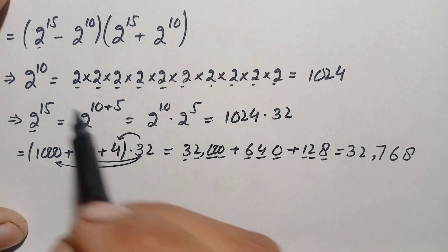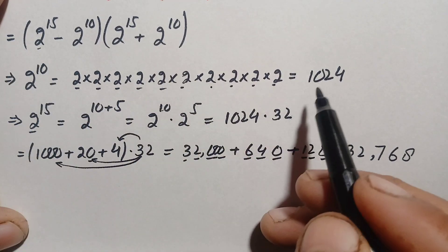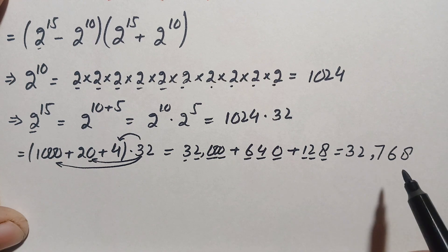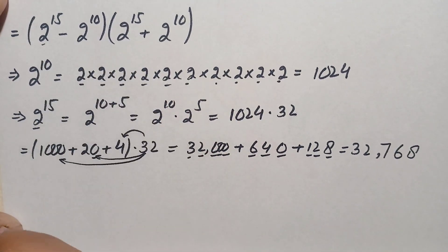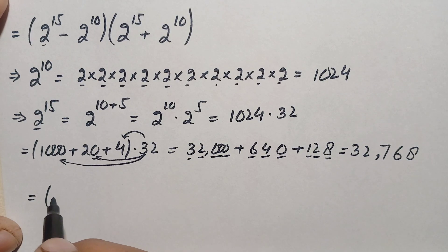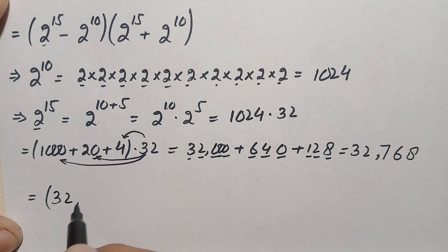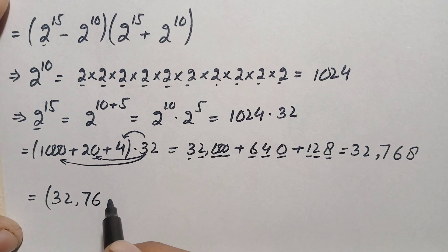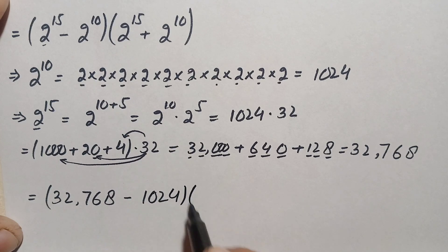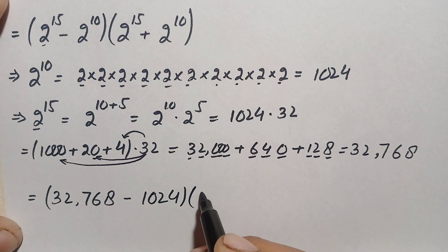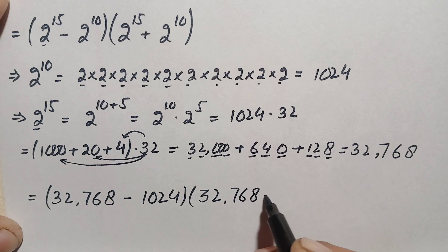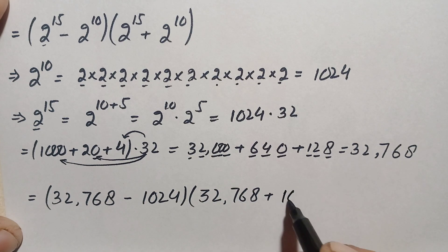Now we substitute the values: 2 raised to power 15 is 32,768 and 2 raised to power 10 is 1024. The expression becomes: 32,768 minus 1024, times 32,768 plus 1024.